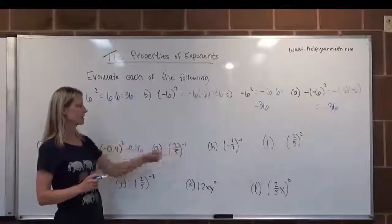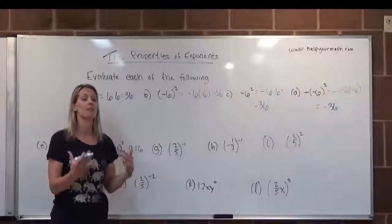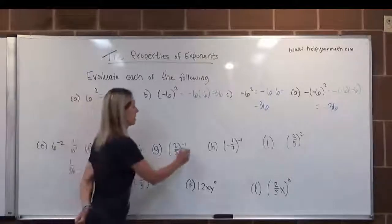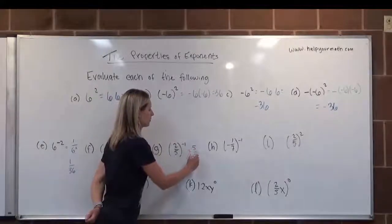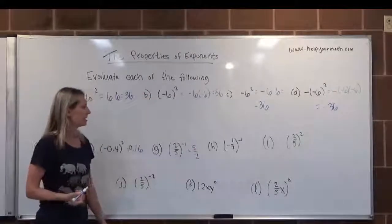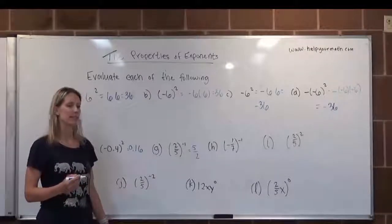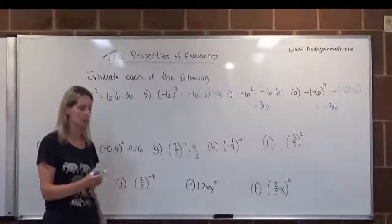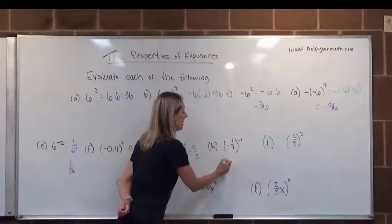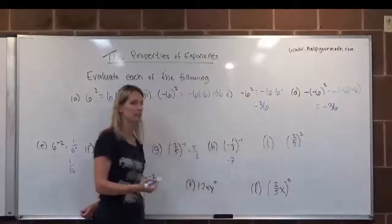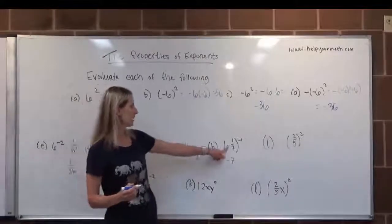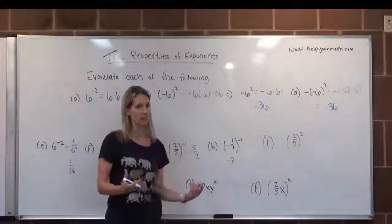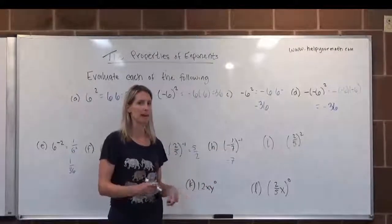In letter G, 2 fifths to the negative 1 literally means find the reciprocal of 2 fifths, which would be 5 over 2. And letter H, we have negative 1 seventh to the negative 1. That literally translates to find the reciprocal of negative 1 seventh. That would be negative 7 over 1, which is just negative 7. Again, this negative stays because when we take the reciprocal of a number, the reciprocal has the same sign as the number itself.